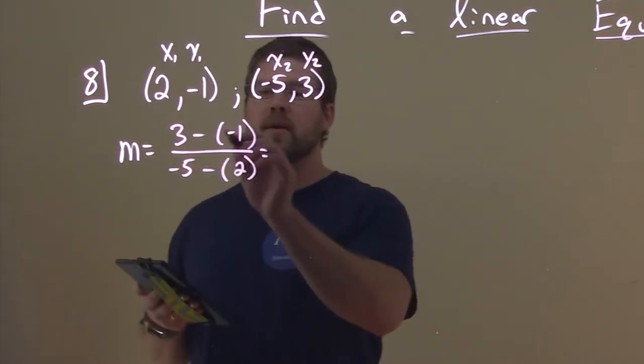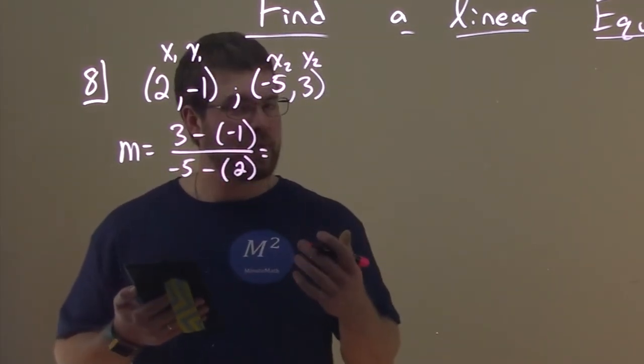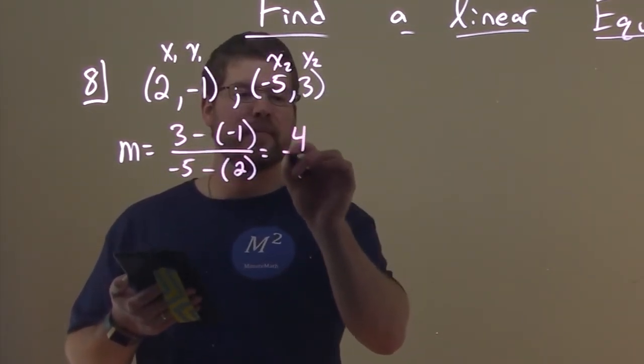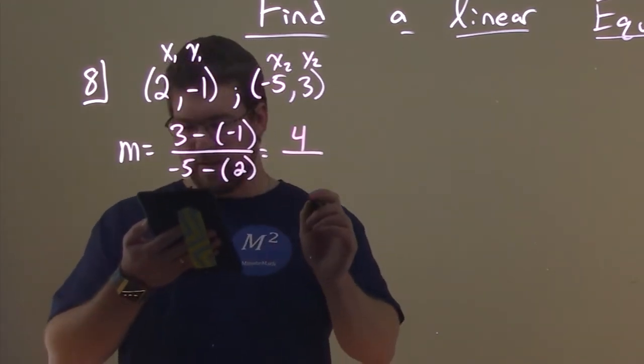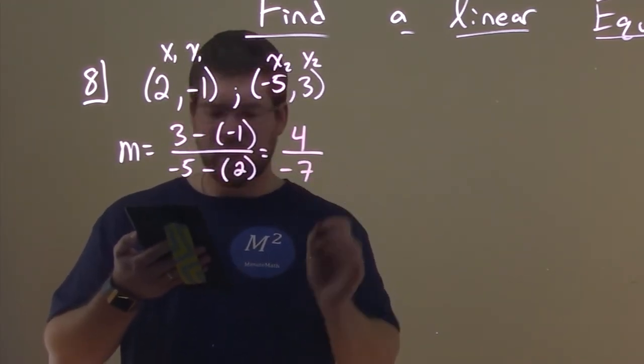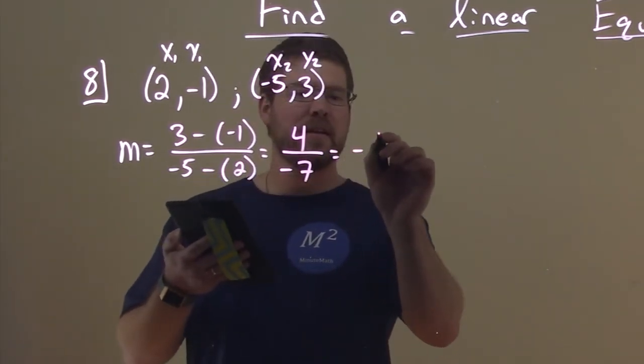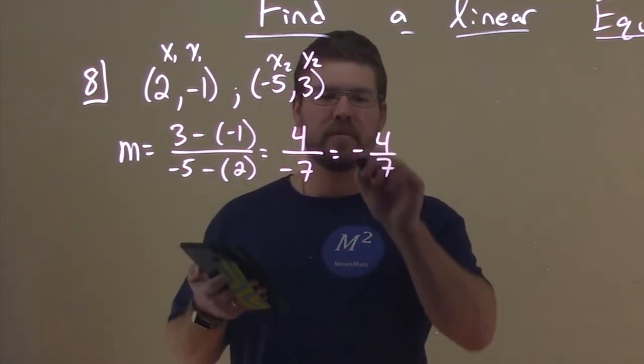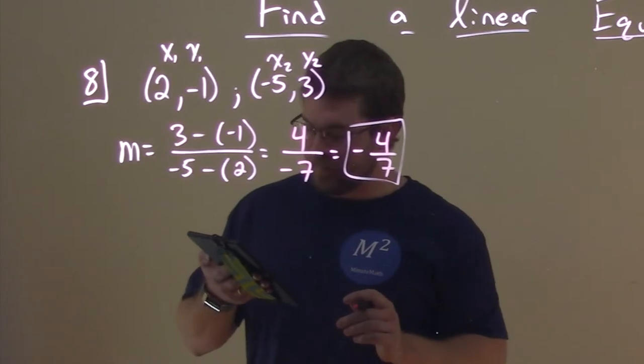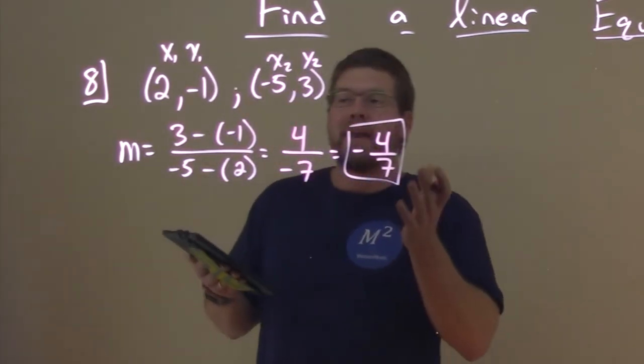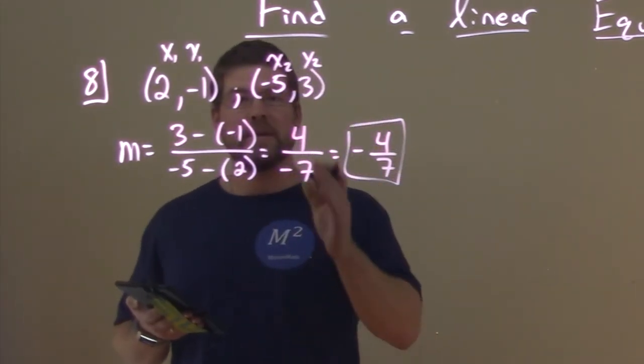That simplifies, 3 minus a negative 1 is like plus a positive 1, and we have a 4 here. Negative 5 minus 2 is a minus 7, and so our slope here is just a negative 4 sevenths. Not too bad.